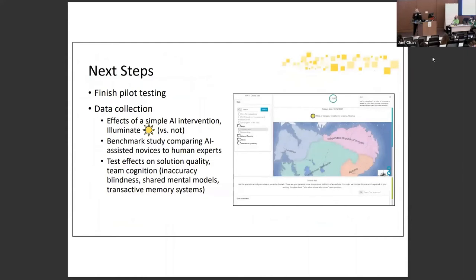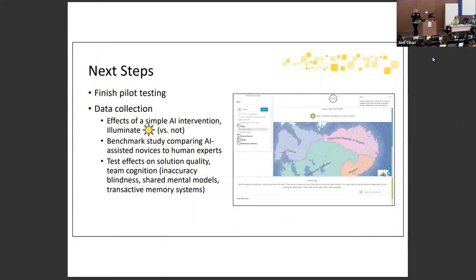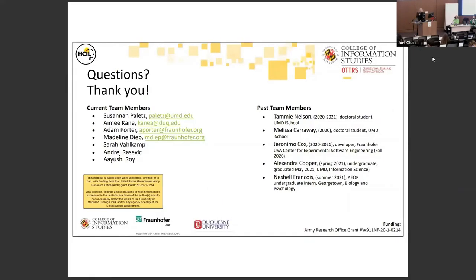Our next steps are to finish pilot testing and then move into data collection. We'll look at the effects of a simple AI intervention — whether participants have the Illuminate summaries or not — and then benchmark the study by comparing MTurk participants to actual intelligence analysts or people who work in jobs requiring significant problem solving. We'll then test the effects on solution quality and team cognition. We don't have a poster but I'll be at the poster session happy to answer questions.